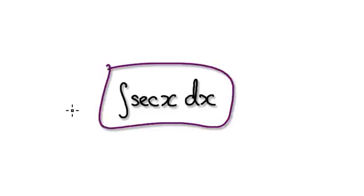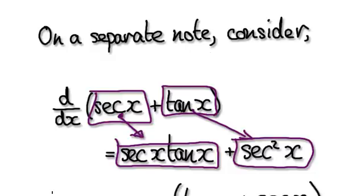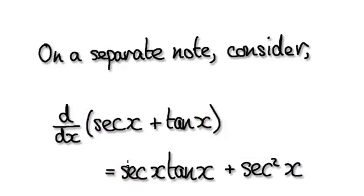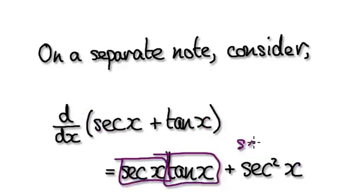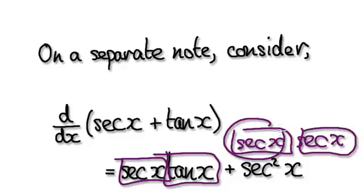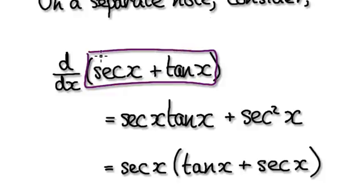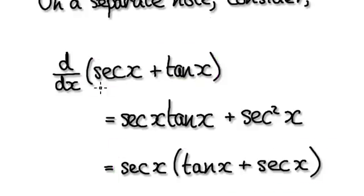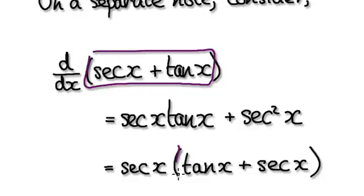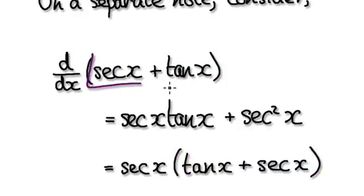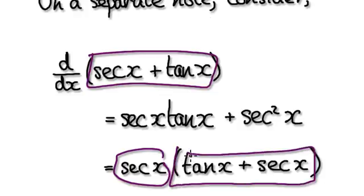We are trying to integrate sec(x), but on a separate note, let's consider this thing here. When you differentiate it, it will give you this. What you've got is one block multiplying with another block, and this thing here is really sec(x) times sec(x). So sec is in common — factor out the sec — and that gives you this. Notice that this part here is exactly the same as this part here — these two are actually the same.